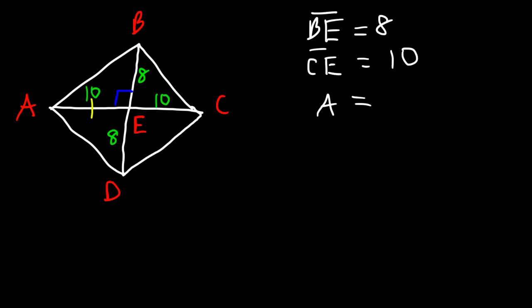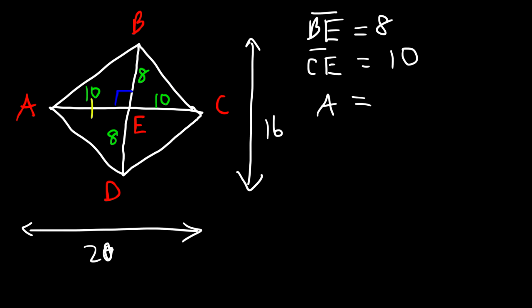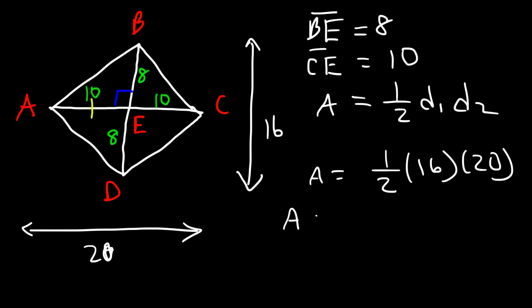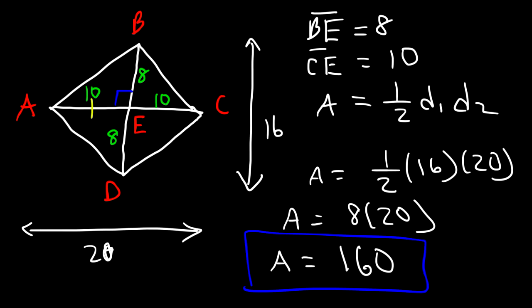Now we have the full diagonals: diagonal AC is 10 plus 10, or 20 units long, and diagonal BD is 8 plus 8, or 16 units long. Using the formula — one-half times D1 times D2 — D1 is 16 and D2 is 20. Half of 16 is 8, and 8 times 20 is 160. So the area is 160 square units.